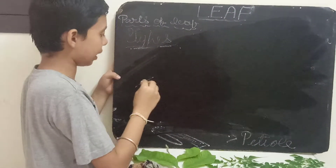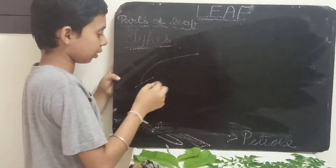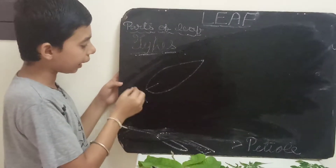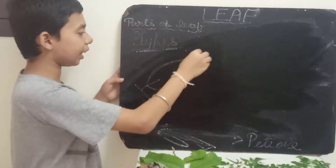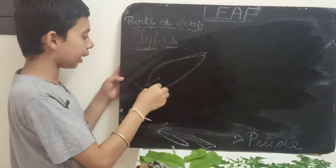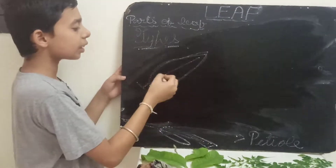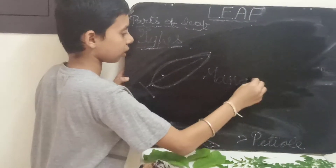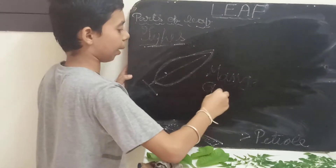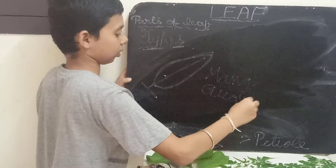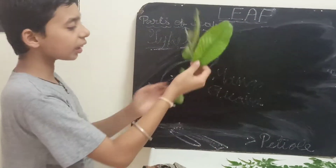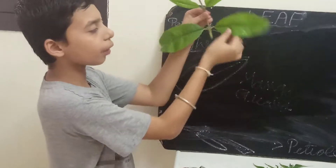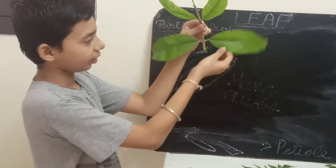The first type is simple leaf. See, this is the simple leaf. From the petiole, just a single leaf — just one leaf will arise. It is called as simple leaf. Examples are mango and guava. This is the simple leaf — one leaf, just from the petiole, only one leaf is arising. Single leaf.